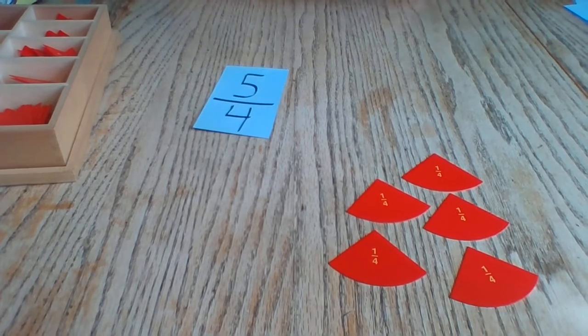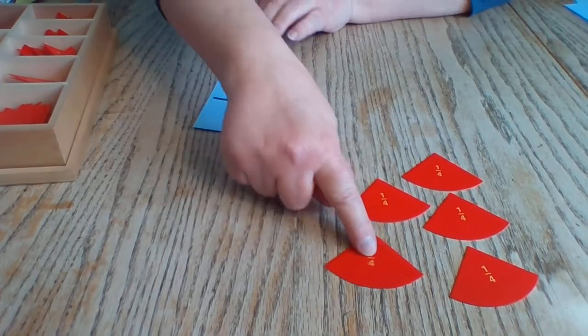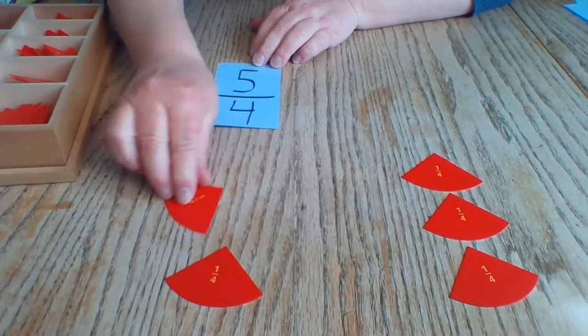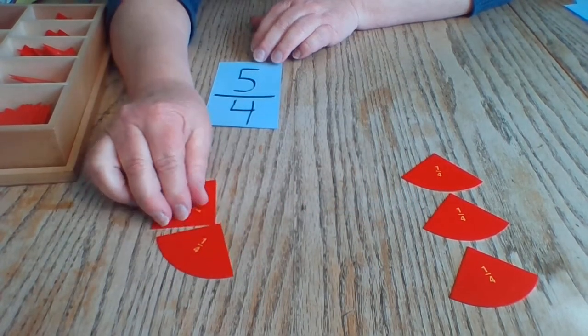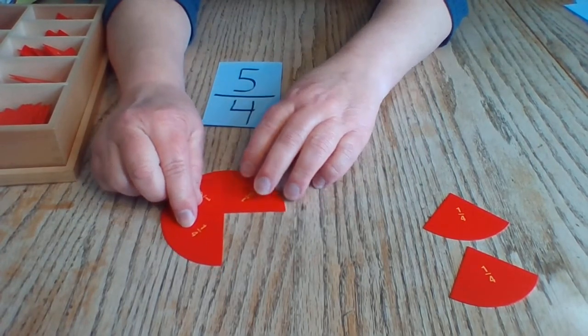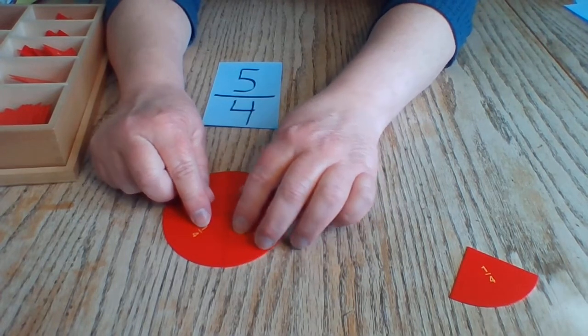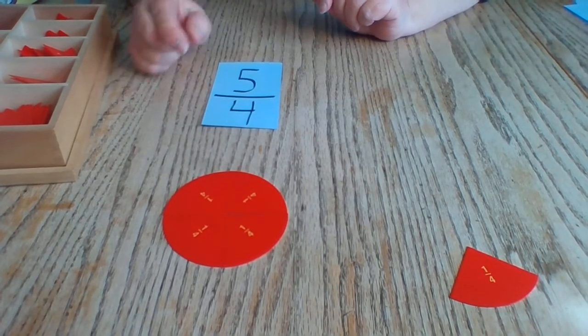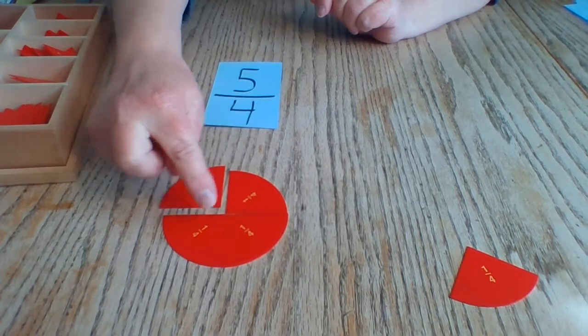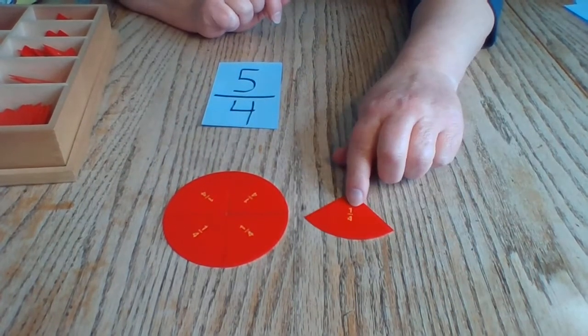Let's see if we can find a whole number here out of all of these fourths. How many fourths did it take to make one whole? Four-fourths. One, two, three, four.